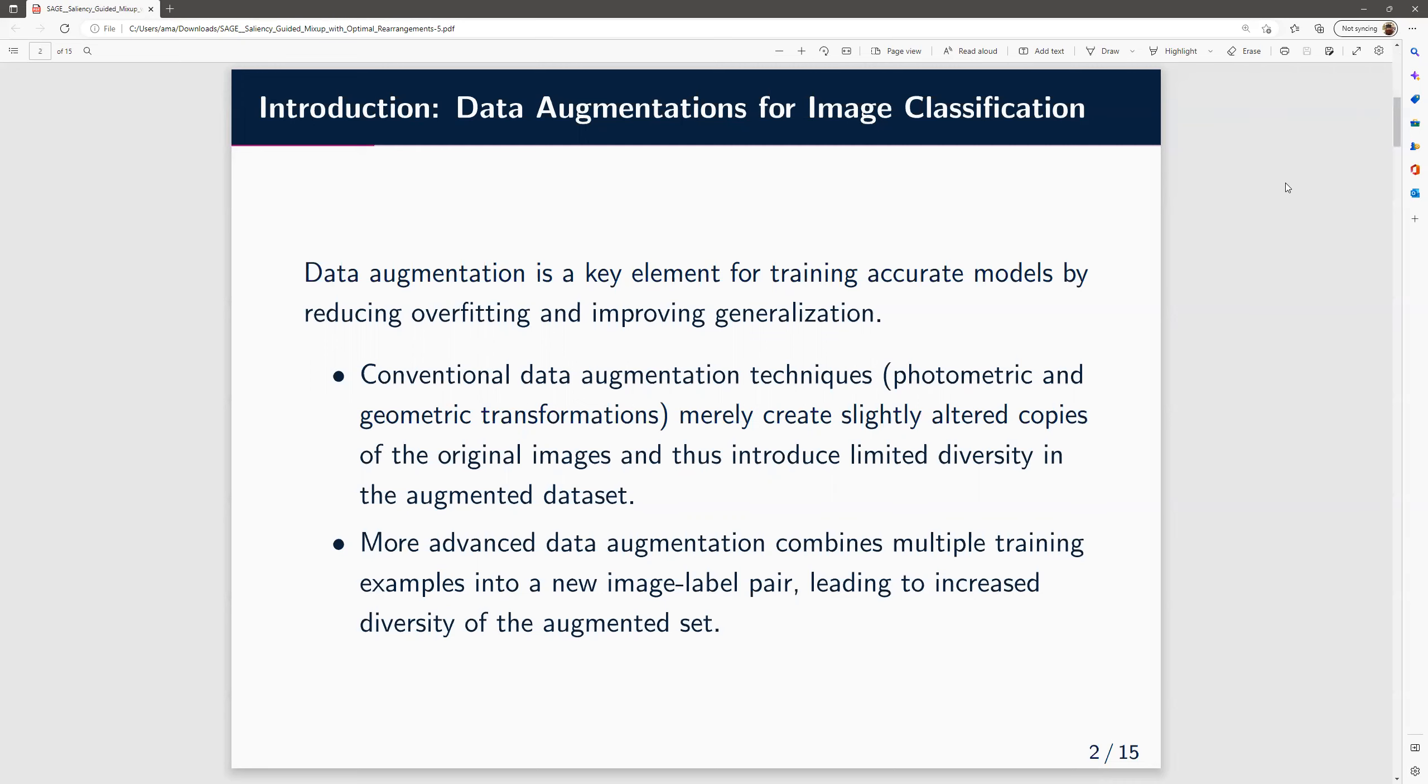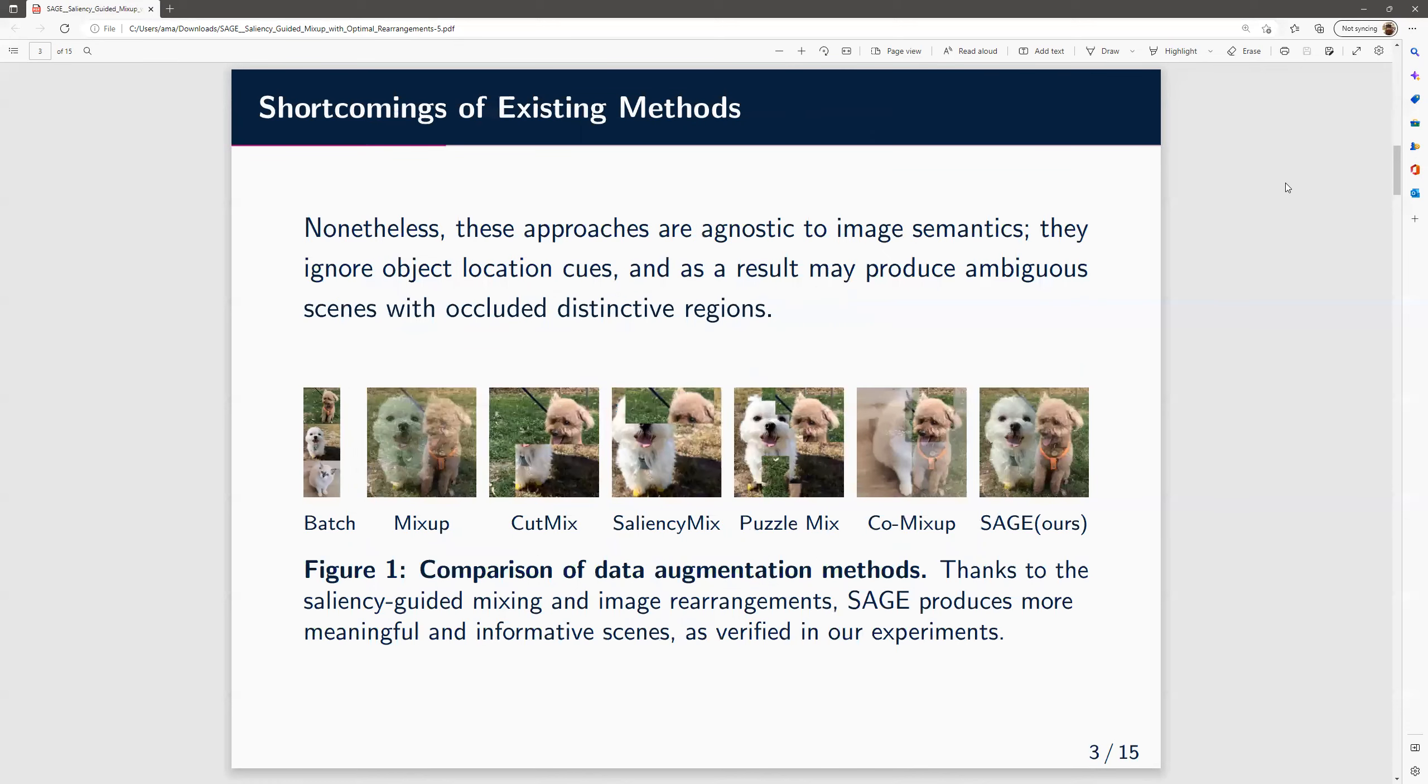More advanced data augmentation approaches combine multiple images into new image-label pairs, leading to increased diversity of the augmentation set. However, these approaches are mostly agnostic to image semantics. That is, they ignore the object location cues and, as a result, produce ambiguous scenes with occluded regions.